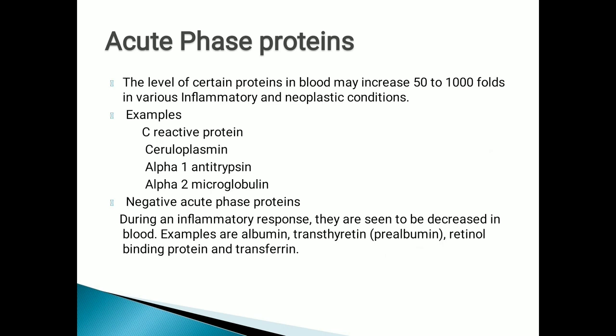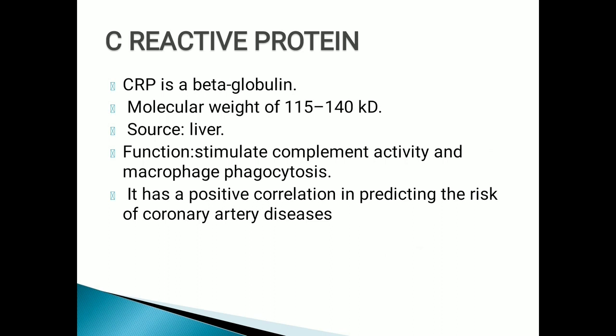Acute phase proteins: these proteins increase many fold in cases of inflammation or neoplastic conditions. Examples include C-reactive protein, ceruloplasmin, alpha-1 antitrypsin, and alpha-2 macroglobulin. Negative acute phase proteins decrease in inflammatory or neoplastic conditions; examples are albumin, transthyretin, retinol binding protein, and transferrin.